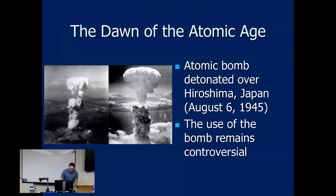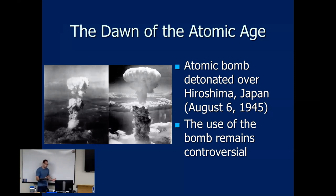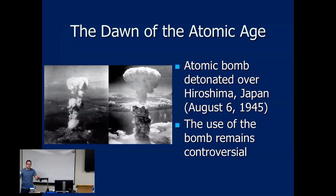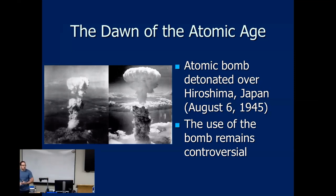The atomic bomb effectively ended World War II — the Allied forces prevailed. But with the atomic bomb, many questions arose about this new nuclear age: who would have access to the bomb and who gets to make that decision. The Soviet Union successfully tested their own nuclear weapon in 1949. The United States and Soviet Union emerged as the two world powers with different ideologies. They had been allies in WWII because of a common enemy, but once that enemy was defeated, tension rose rapidly — and this is what we call the Cold War.